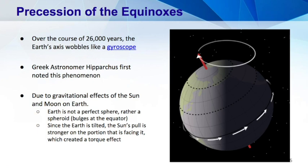We have to look at a phenomenon called precession of the equinoxes. Over the course of 26,000 years, the Earth's axis wobbles like a gyroscope. The ancient Greek astronomer Hipparchus first noted this when he noticed that his measurements of the stars were slightly different than the very ancient Babylonian measurements. He concluded that precession is the reason for this change. This phenomenon is caused by the gravitational forces of the sun and moon, in addition to the fact that the Earth is actually a spheroid and not a perfect sphere. Since the Earth is tilted, the sun's gravitational pull is stronger on the portion that is tilted towards the sun, which creates a torquing effect on the planet. If the Earth were a perfect sphere, there would be no precession.